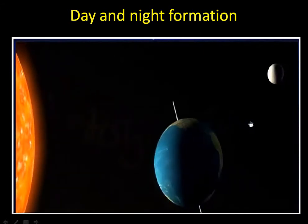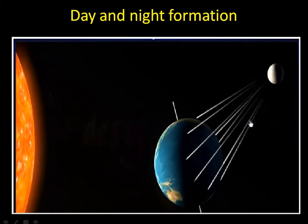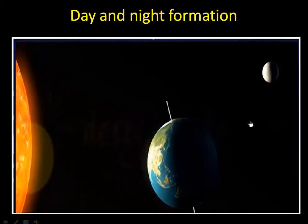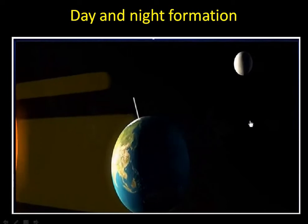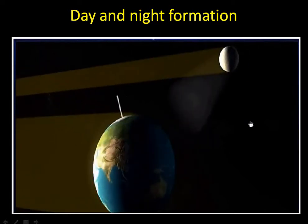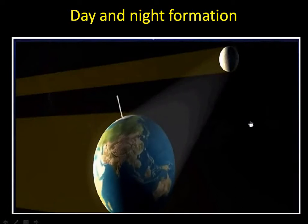The part of the Earth which has nighttime is illuminated by the Moon. The Moon does not make its own light — it is sunlight that strikes the surface of the Moon. The Moon then reflects this light onto the Earth during night.